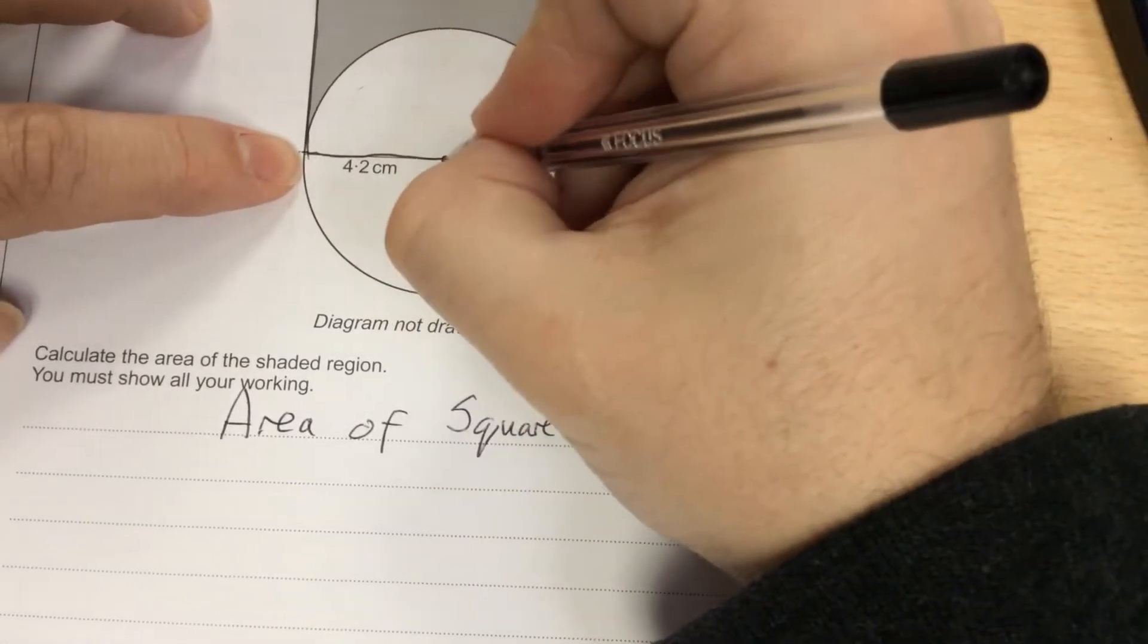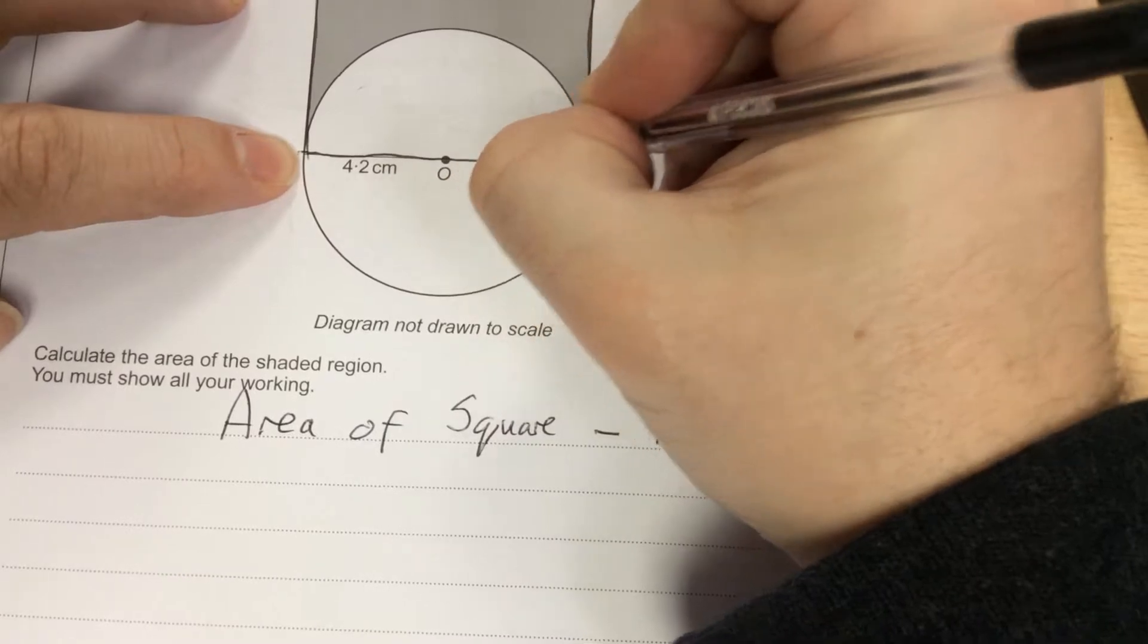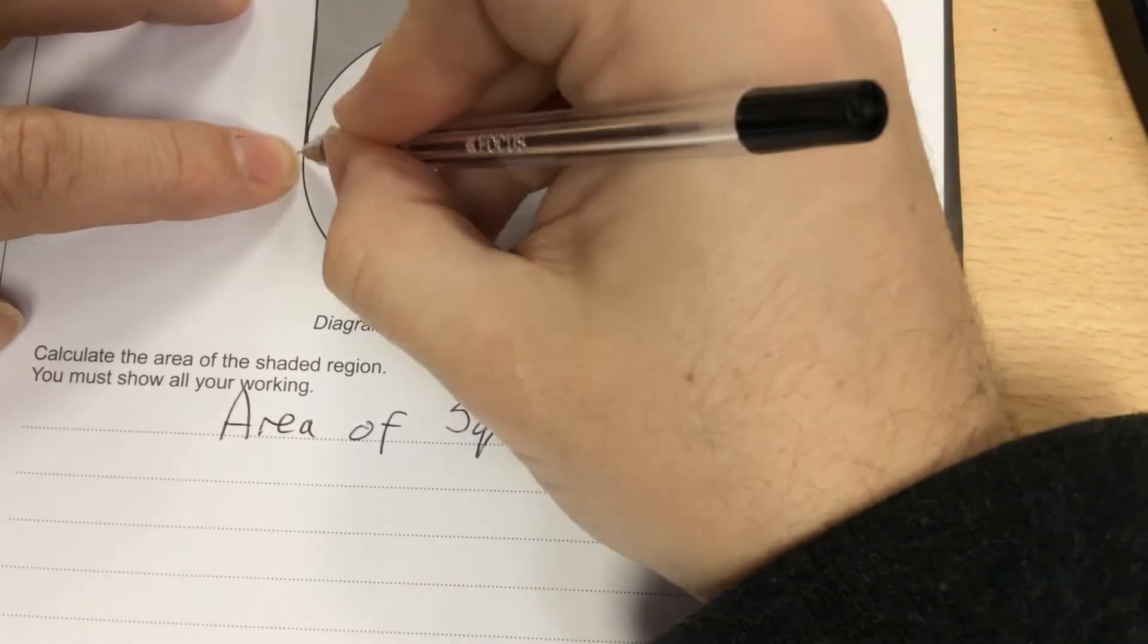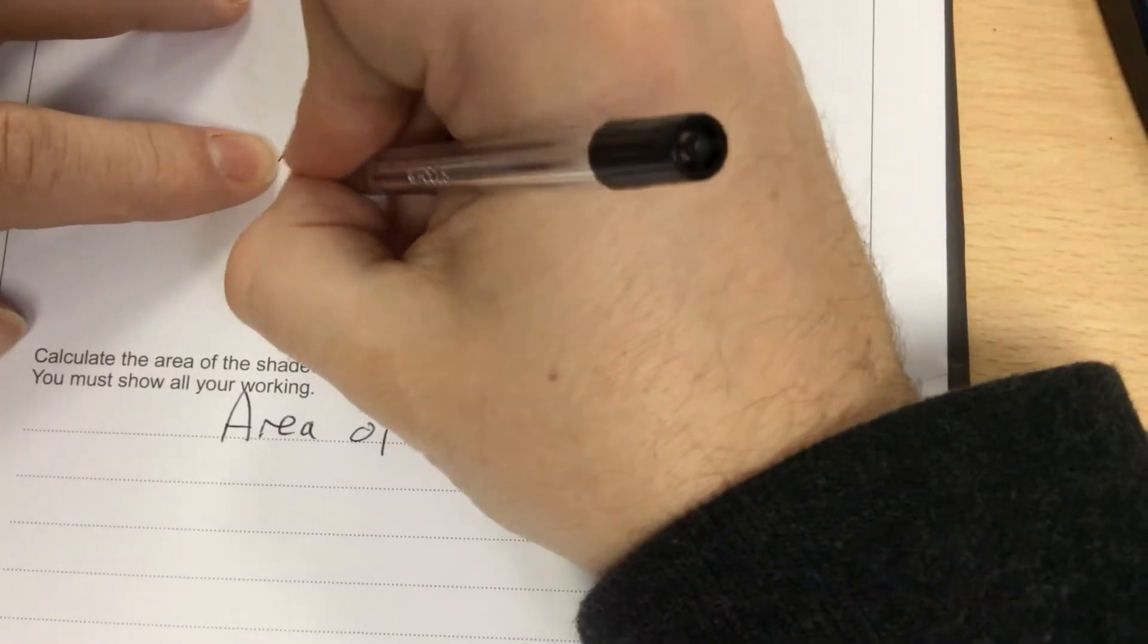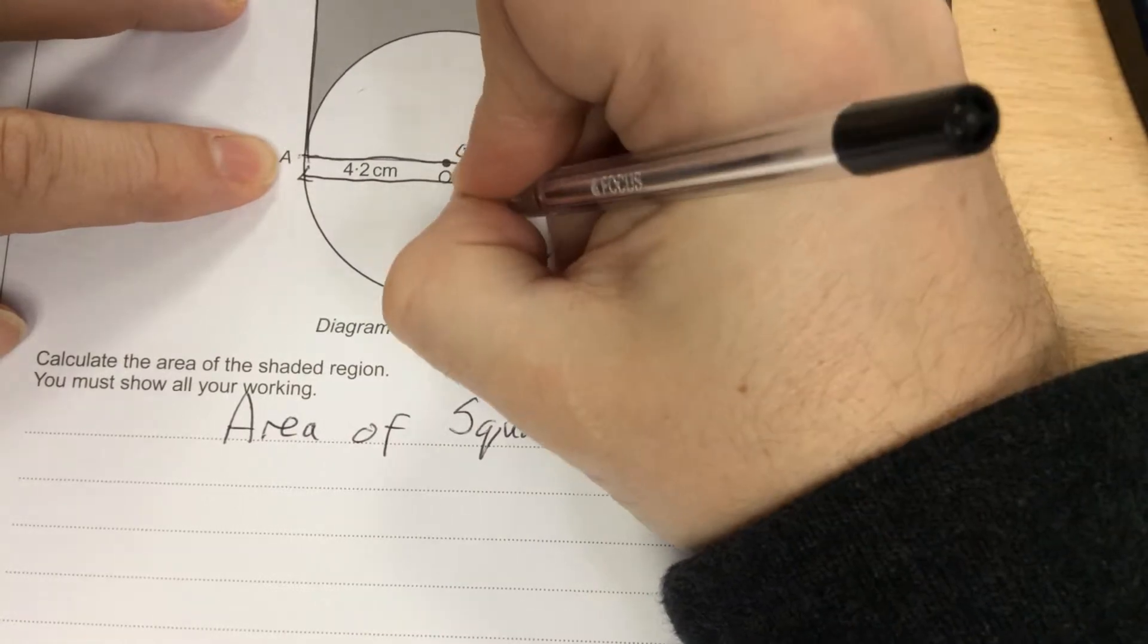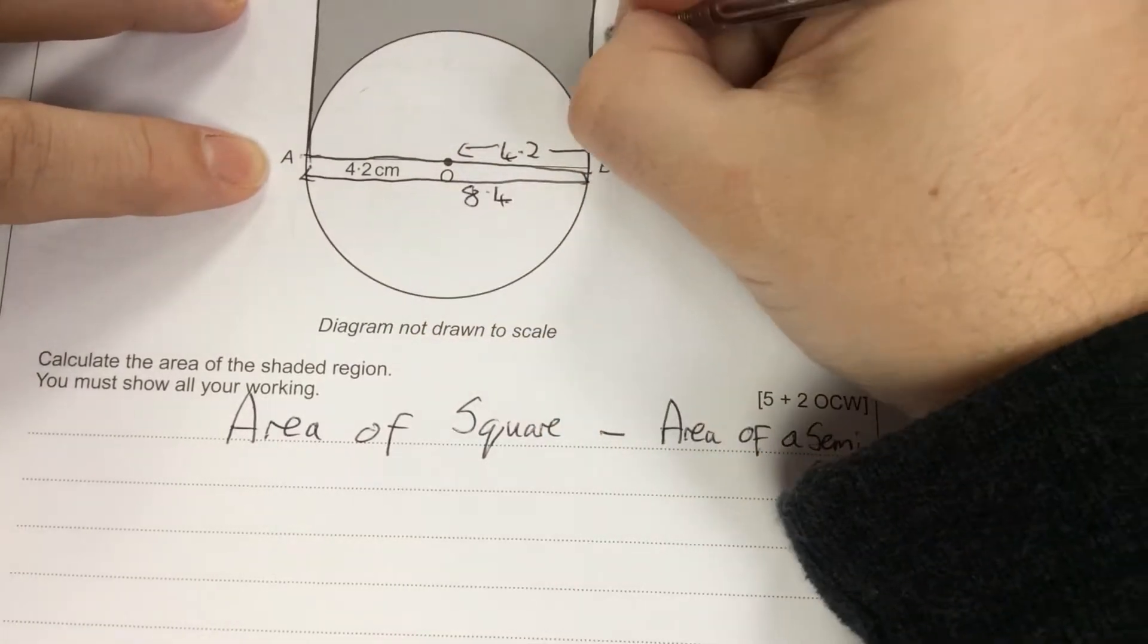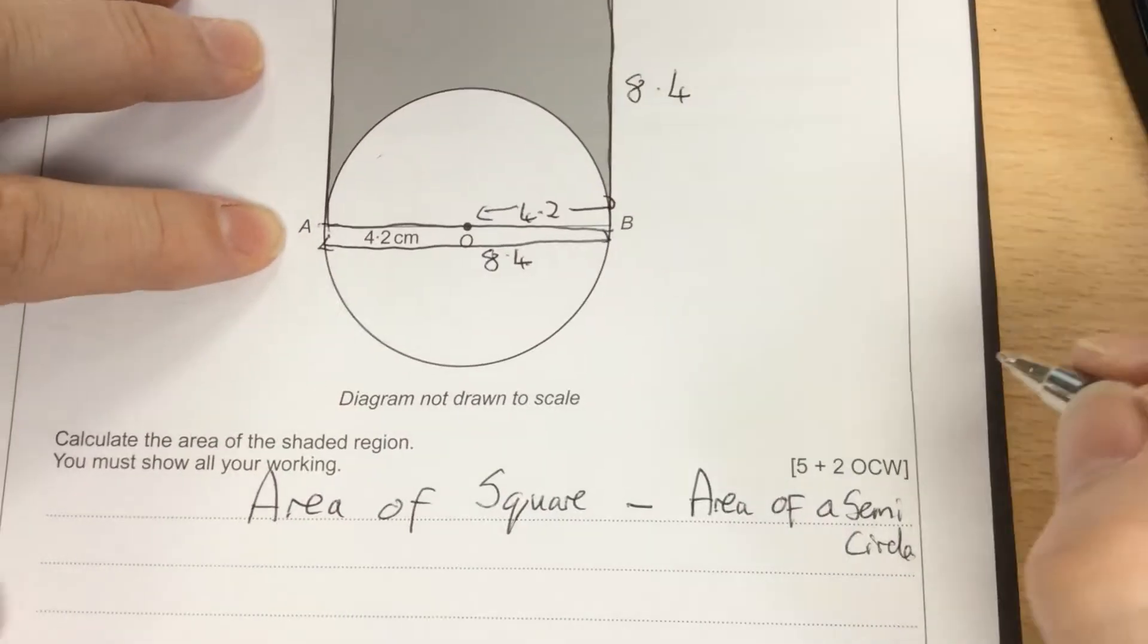So if this is 4.2, the radius, this is also 4.2 on this side. So in total, the length across the square, the diameter, is going to be 8.4. And because it's a square, they're both 8.4.